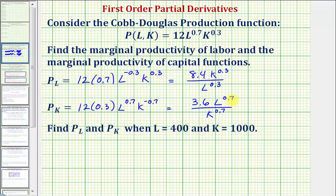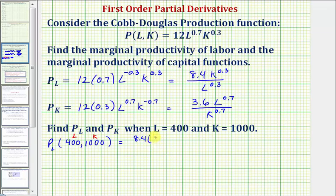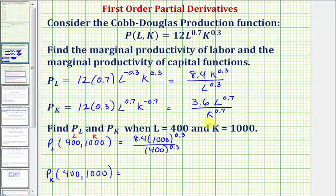Now that we have our two functions, we're asked to evaluate them when L equals 400 and K equals 1,000. For the partial with respect to L at (400, 1000), we would have 8.4 times K — or 1,000 — raised to the power of 0.3, divided by L — or 400 — to the 0.3. For the partial with respect to K at the same point, we'd have 3.6 times L — or 400 — raised to the power of 0.7, divided by K — or 1,000 — raised to the power of 0.7.